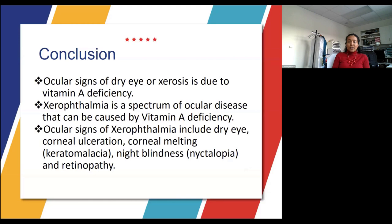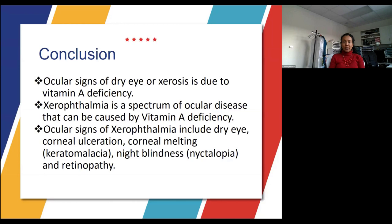In conclusion, ocular signs of dry eye or xerosis are due to vitamin A deficiency. Recall that xerophthalmia is a spectrum of ocular diseases including dry eye, corneal ulceration, corneal melting or keratomalacia, night blindness or nyctalopia, and retinopathy. Keep in mind that while vitamin A is beneficial for these ocular manifestations, it does not slow down the progression of myopia.